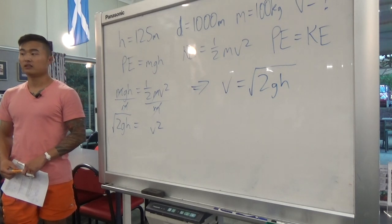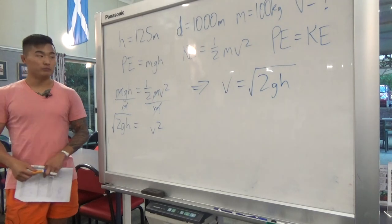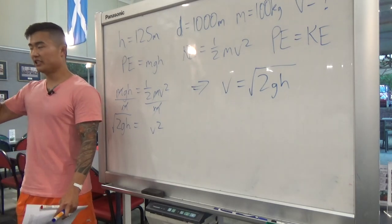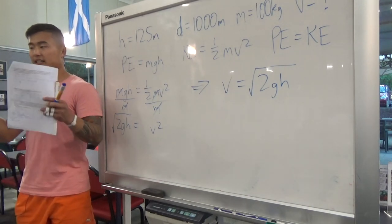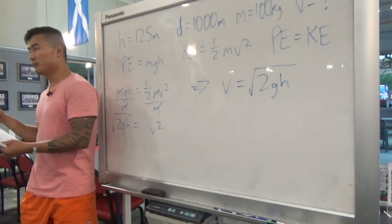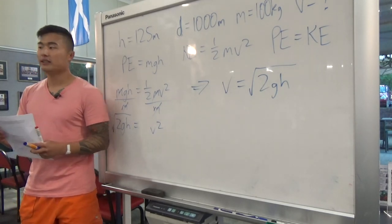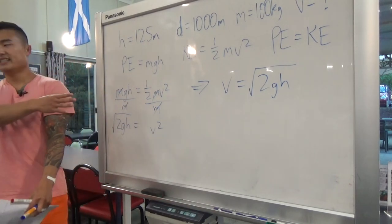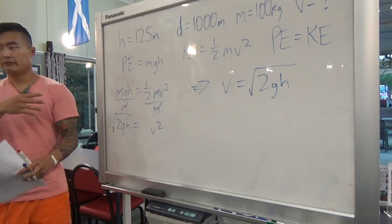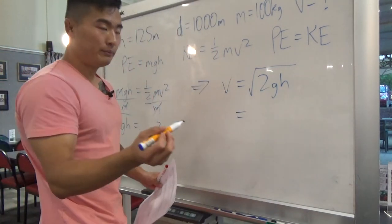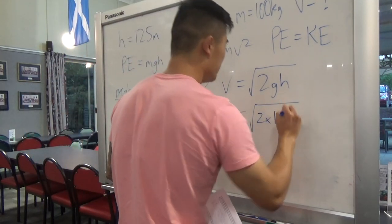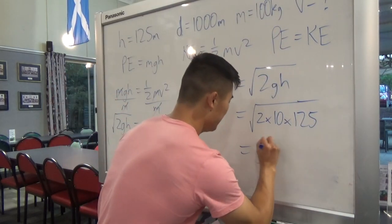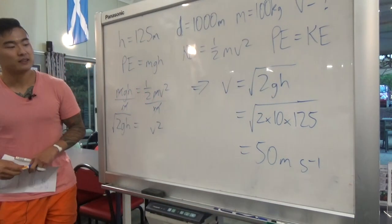If the initial velocity is not zero, you'd use a different equation and would also need to calculate the initial kinetic energy. But for most problems, they start from rest. Using v equals the square root of 2gh: square root of 2 times 10 times 125 gives the same answer — 50 meters per second.